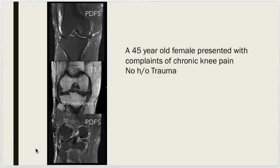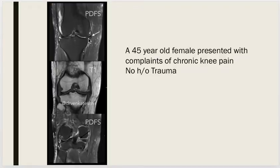We are looking at PD coronal images and a T1-weighted coronal image. On the first PD image, you can see the lateral meniscus, medial meniscus, and medial collateral ligament, with minimal fluid in the lateral patellar recess. The medial meniscus is seen displaced out of the tibial margin, measuring approximately 6mm from the lateral tibial margin to the outermost part of the displaced meniscus.